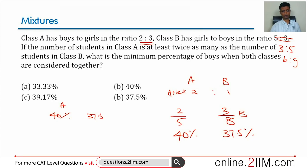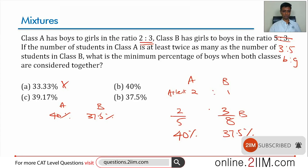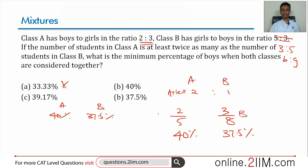We are mixing these two classes, so the percentage of boys has to be between these two percentages — between 37.5% and 40%. We can eliminate any answer choice outside that range. The value can be anywhere between 40% and 37.5%, but since class A has at least twice as many students as class B, the weightage of A is higher, so the final answer should be closer to 40% than 37.5%.